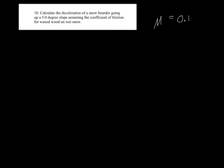Let's see how to do a problem involving friction and forces. We're going to calculate the deceleration of a snowboarder going up a 5-degree slope, assuming the coefficient of friction for waxed wood on wet snow. We have to look up what the coefficient of friction is between wood and snow, and we can find this number: mu equals 0.100.